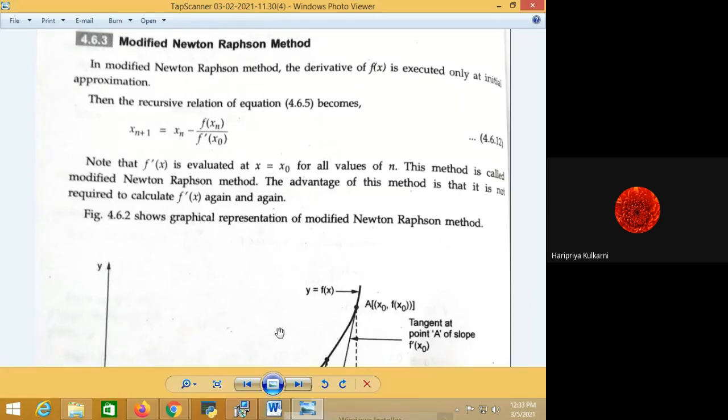We have solved one numerical based on that. So x of n plus 1 with Newton Raphson method was x_n minus f of x_n upon f dash of x_n. For example, x_1 is equal to x_0 minus f of x_0 upon f dash of x_0, where f dash of x_0 is the first derivative of the function.